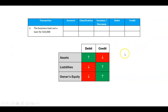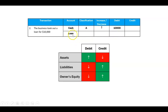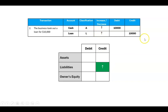Transaction number two: the business took out a loan for $10,000. The business, from its perspective, has more cash. Cash is an asset that's going up, so the rule says when an asset goes up, that's a debit of $10,000. However, when you get that, you get something called a loan, and a loan is a liability. That loan or liability is going up, and the rule says that should be a credit.